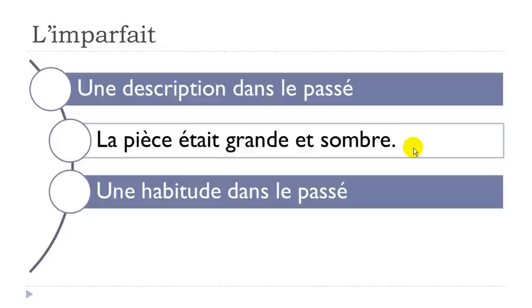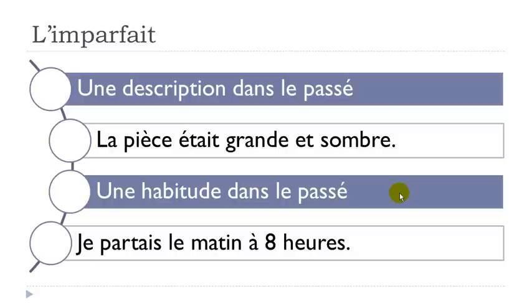The second situation is 'une habitude dans le passé' — a habit, something you were used to doing in the past. The example is 'je partais' — 'partir' is to leave, in imparfait form — 'le matin à 8h'. When you want to say it's a habit from the past, use l'imparfait.